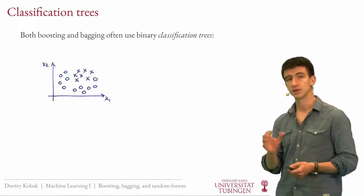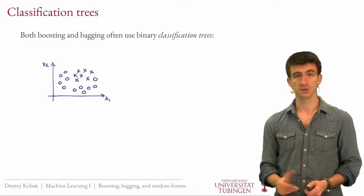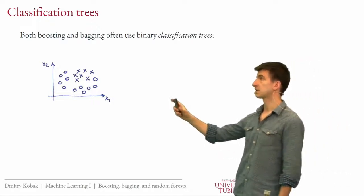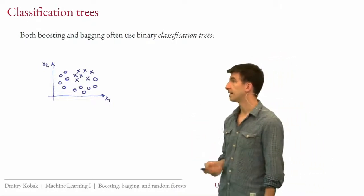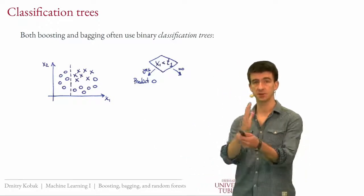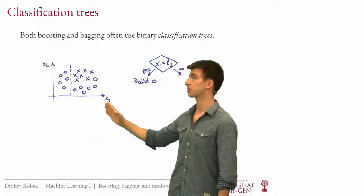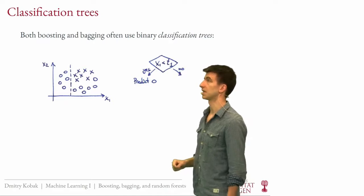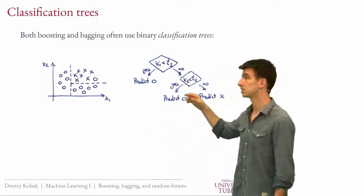I will start by introducing classification trees because bagging and boosting often use this particular kind of model. Imagine a simple dataset with two features and a binary classification problem, where every point belongs to either a circle class or a cross class. In a classification tree, you find one feature with high predictive performance that can be thresholded so all points below the threshold preferentially belong to one class and all points above belong to another. If the value is below the threshold, classify the point as a circle; if above, classify it as a cross or make the model more complicated by looking for the next split.